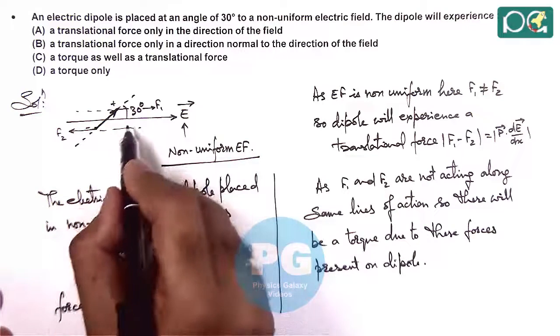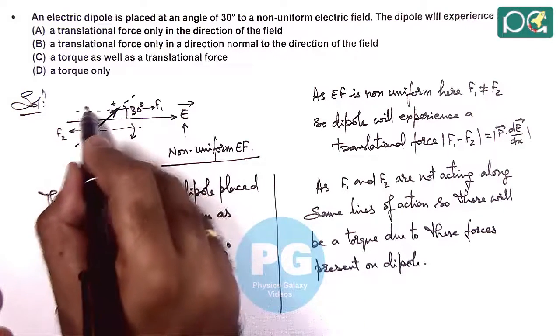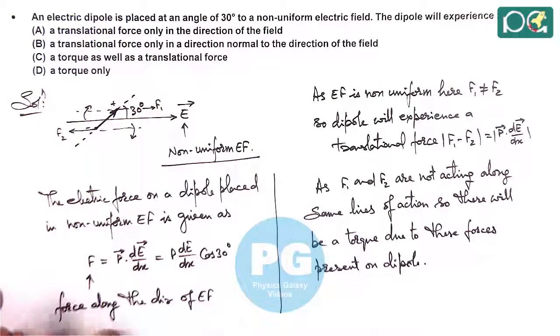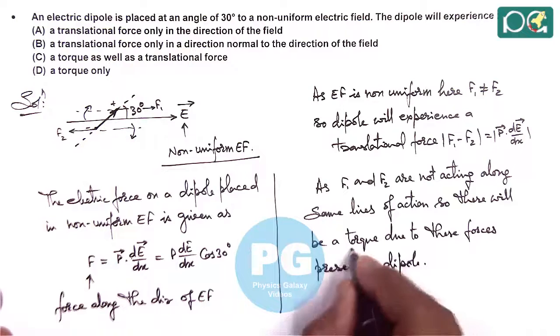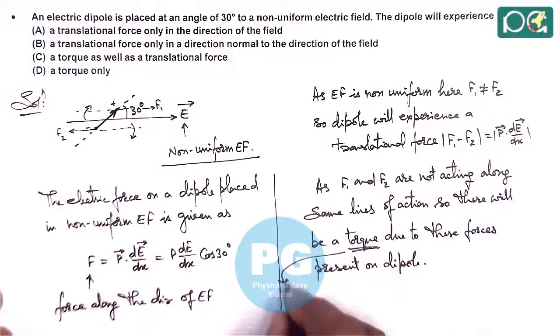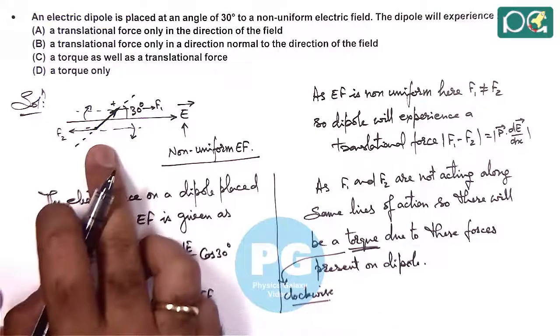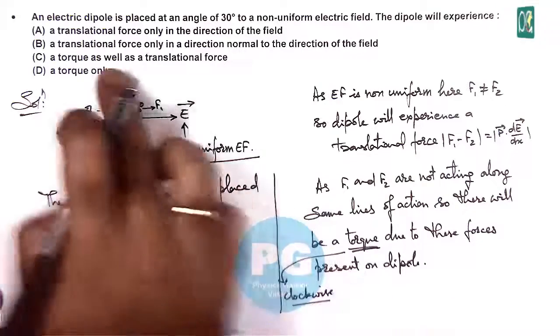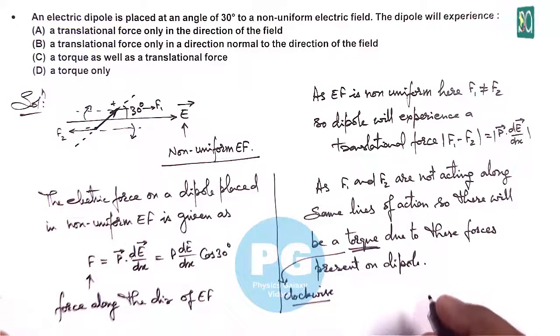So it will have a tendency of clockwise rotation of this dipole. These forces will tend this dipole to rotate clockwise. And here we can say this torque is clockwise as we can see in this figure. So it will be experiencing a translational force as well as a torque. So here we can say answer to this question is option C.